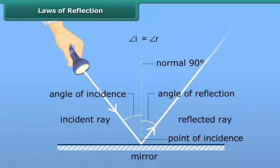The reflection of light at a surface obeys the following two laws, which are called the laws of reflection.